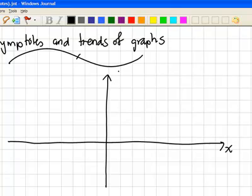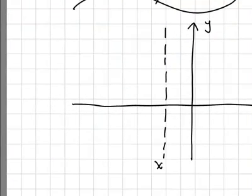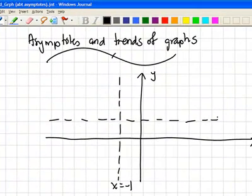With x and y axes, the graph has a vertical asymptote at x equals negative 1, a horizontal asymptote at y equals 2. Then the curve will actually look like this.